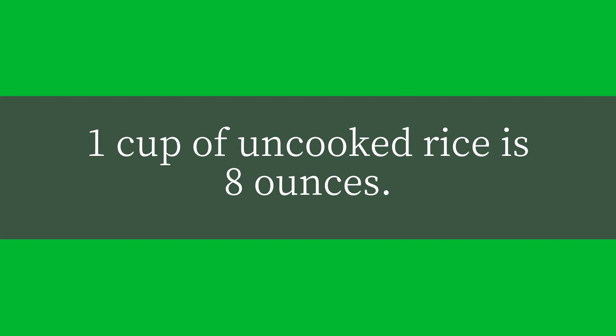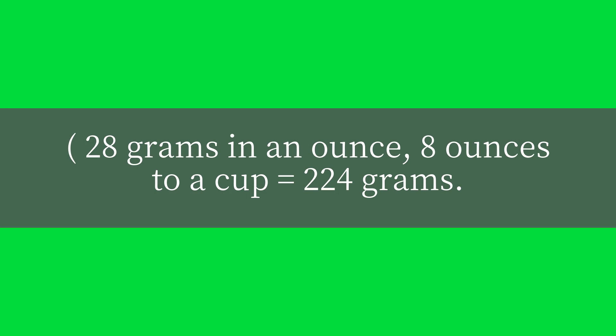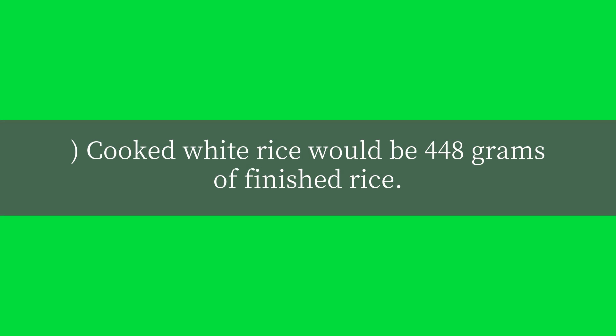One cup of uncooked rice is 8 ounces. There are 28 grams in an ounce, so 8 ounces to a cup equals 224 grams. Cooked white rice would be 448 grams of finished rice.